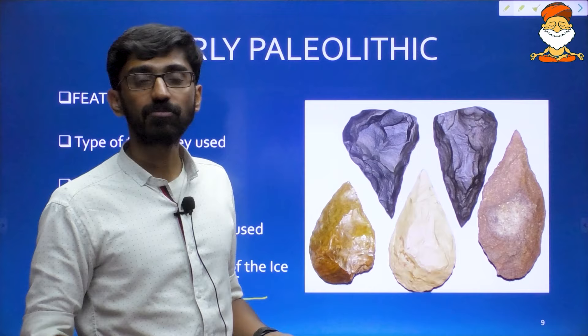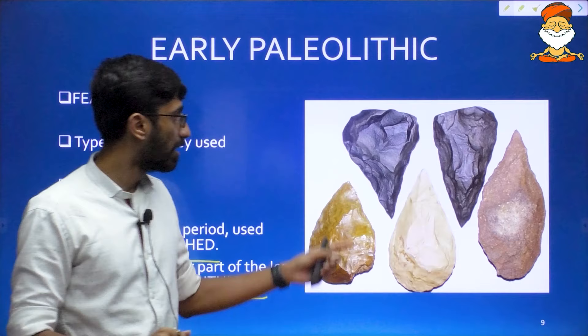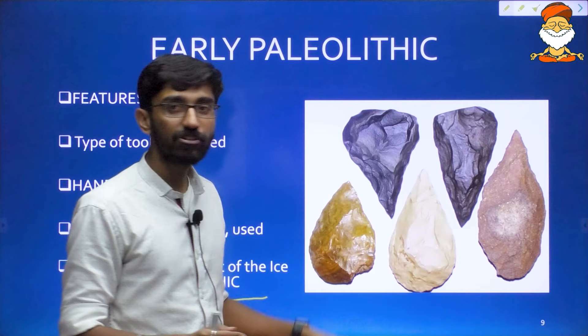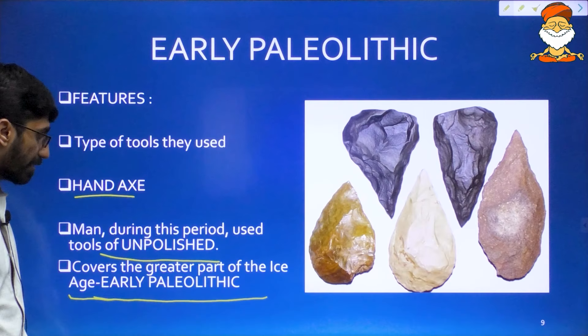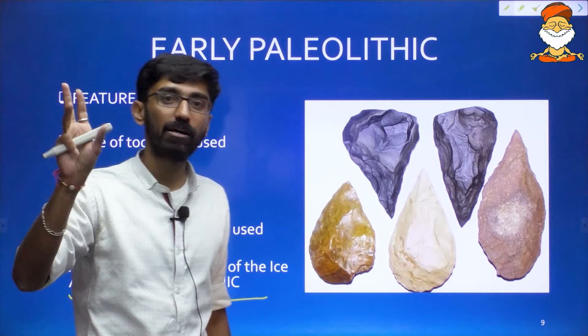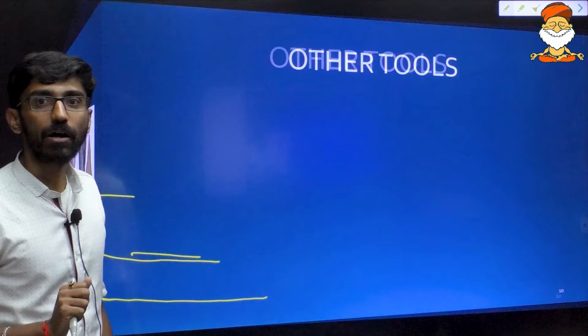These are the Early Paleolithic stone tools called Handaxes. At the same time they are unpolished stone tools. Most of the Early Paleolithic time period covers the ice ages. There are some other tools also used. Any doubts on this? We are getting it. Fine then, we will move.